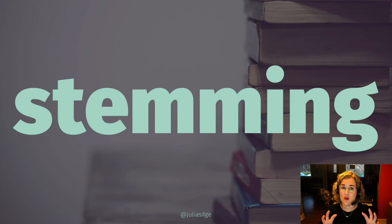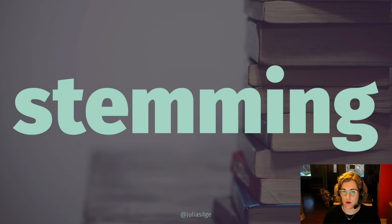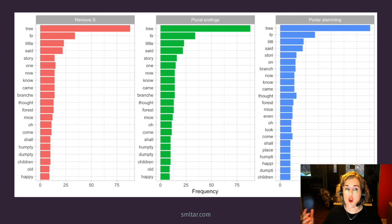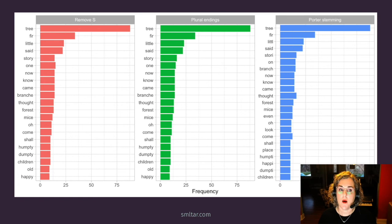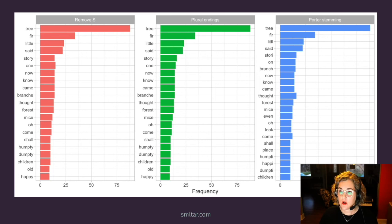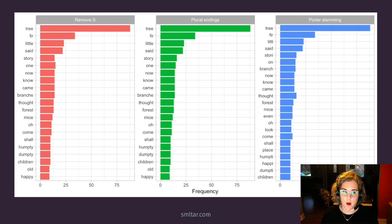When we deal with text, documents often contain different versions of one base word, often called a stem. For example, what if we aren't interested in the difference between 'trees' and 'tree' and we just want to treat both together? That idea is at the heart of the practice of stemming. There's no one right or correct way to stem text. This plot shows three approaches: simply removing a final 's,' more complex rules for handling plural endings called the S stemmer, and one of the best-known implementations called the Porter algorithm. Porter stemming is the most different from the other two.